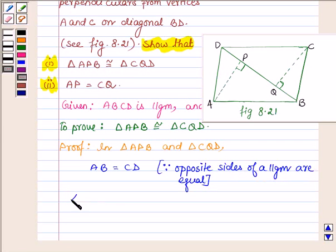Also, angle APB is equal to angle CQD is equal to 90 degrees, since AP is perpendicular on BD and CQ is perpendicular on BD.